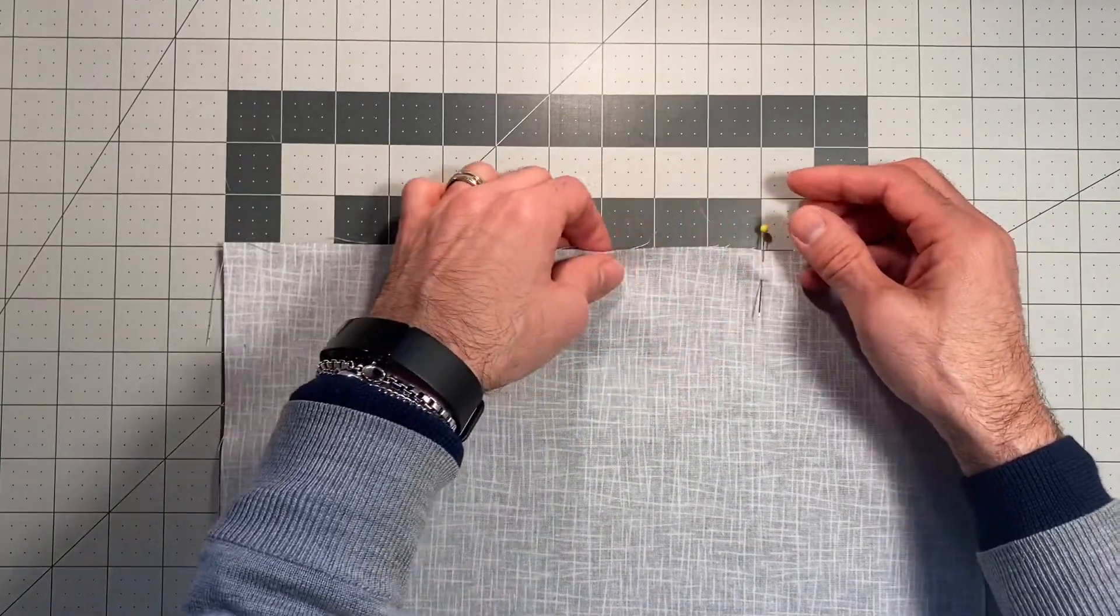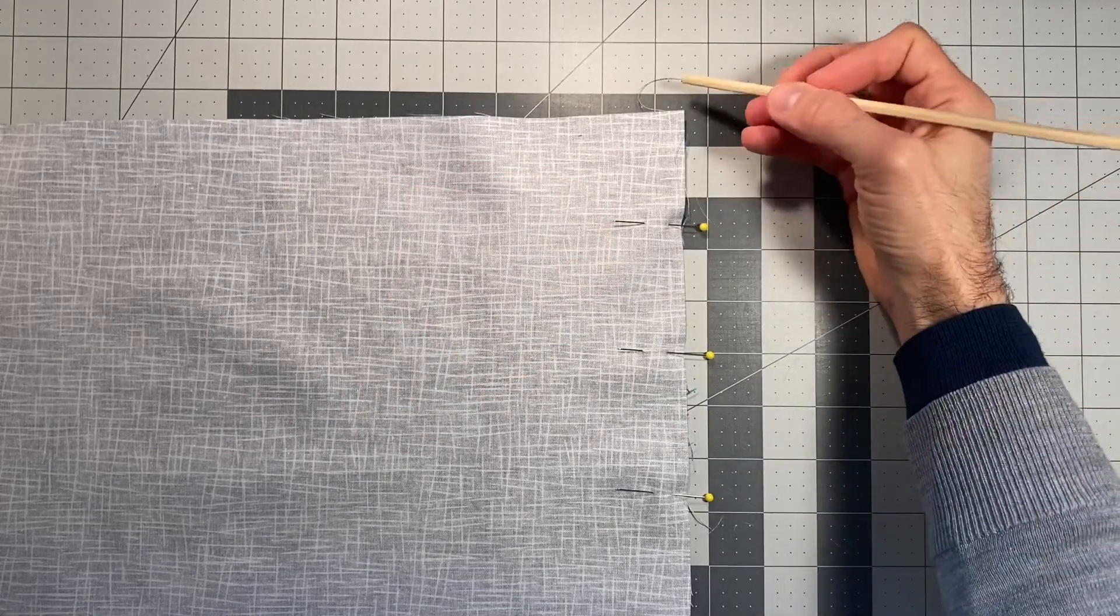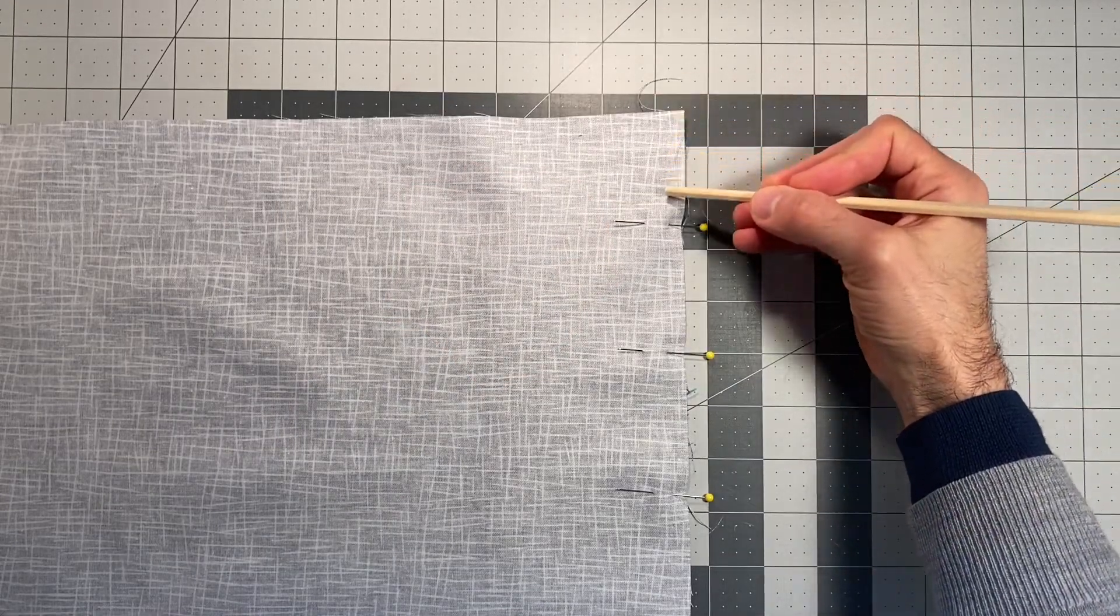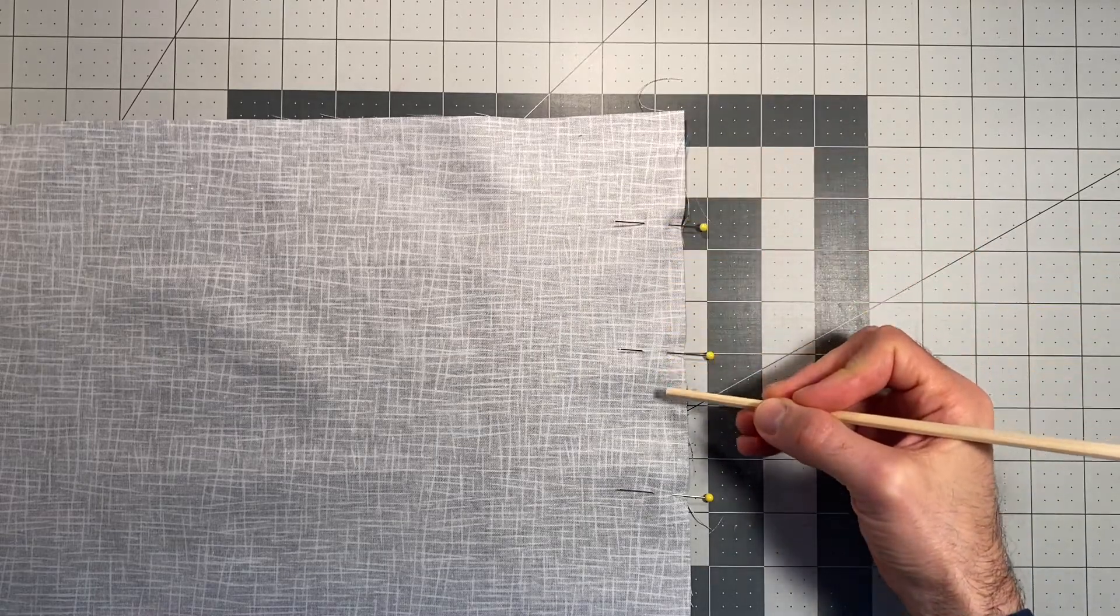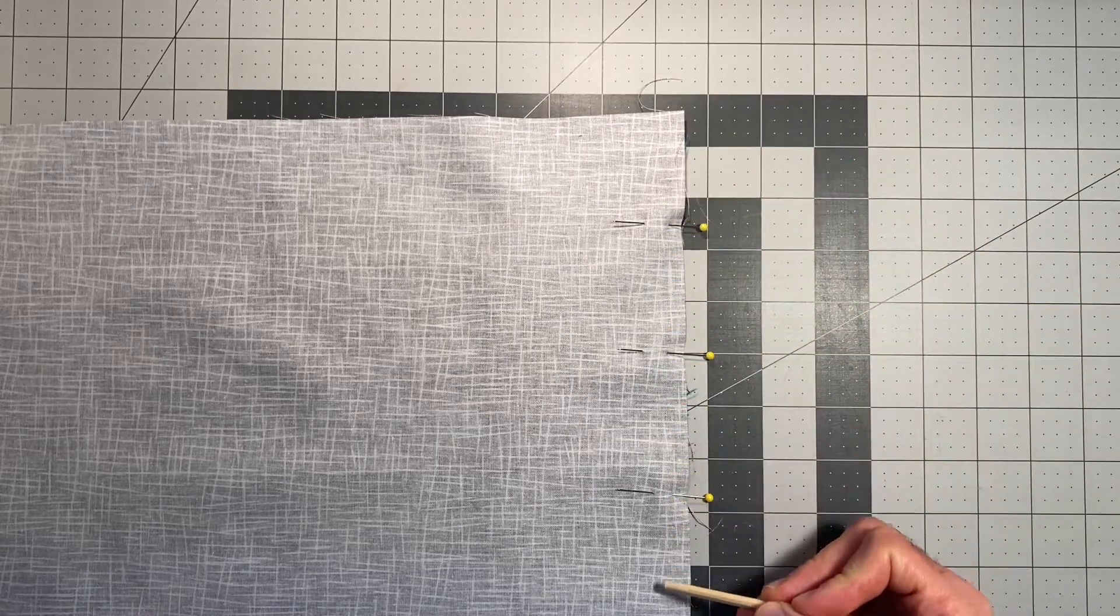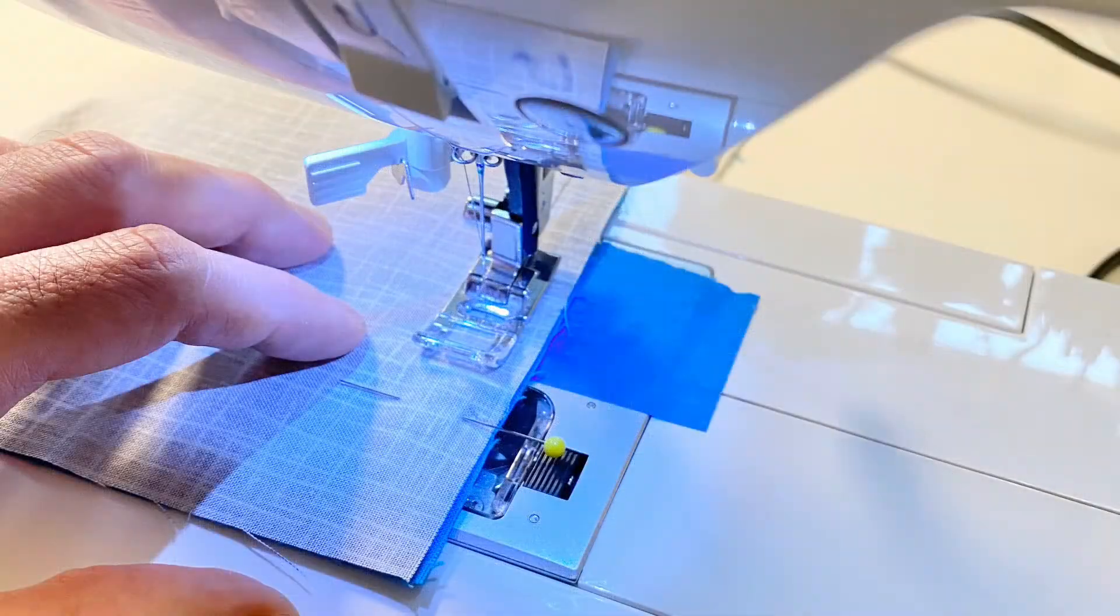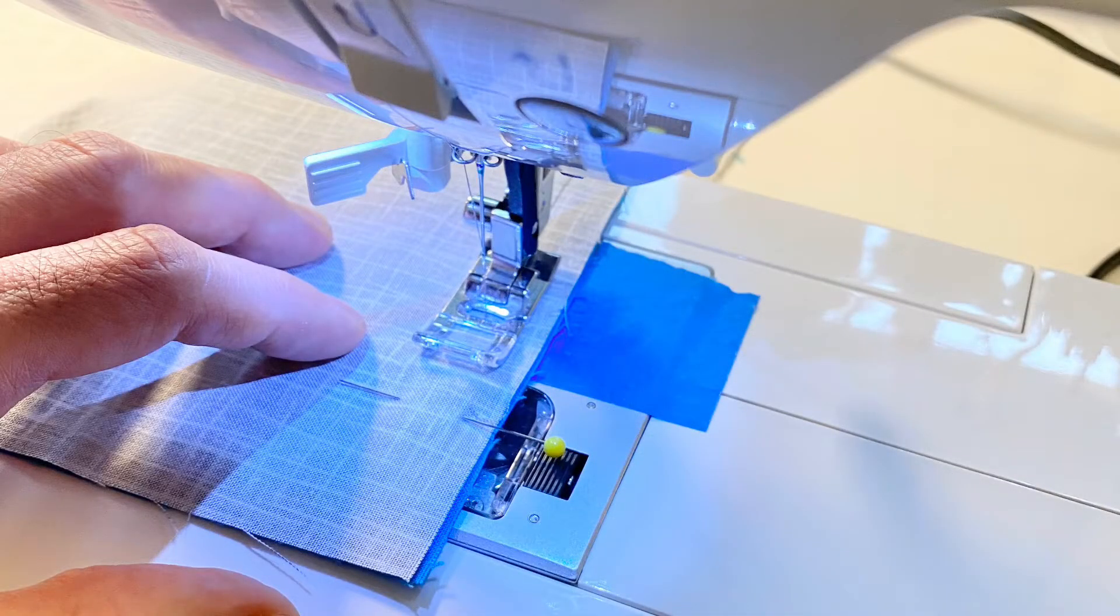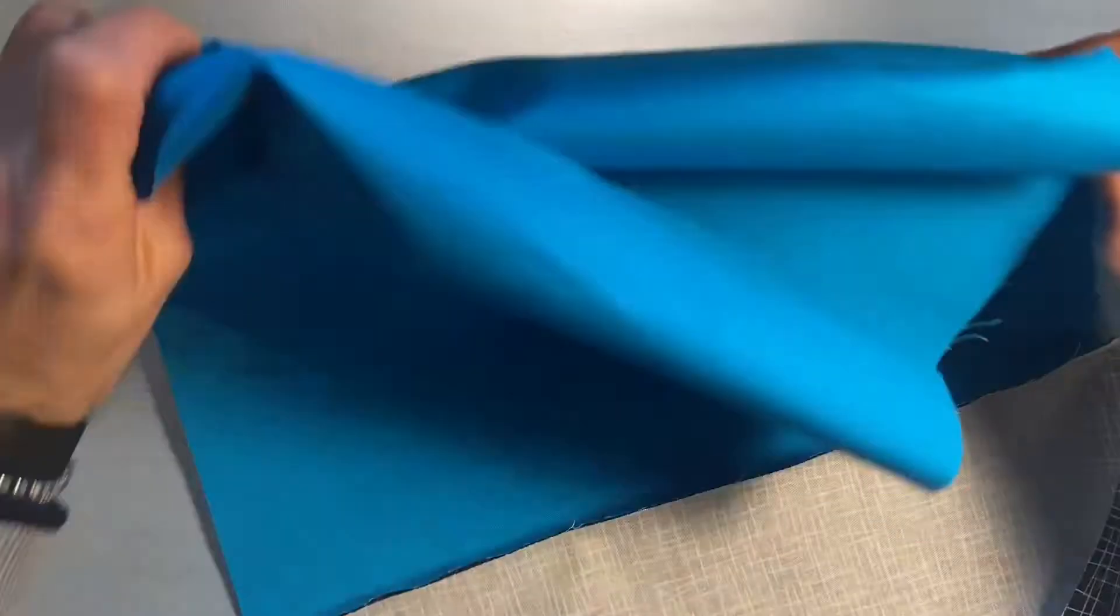Now I'm going to sew with a half inch seam allowance along this 14 inch edge. A half inch seam allowance means the sewing machine's needle is a half inch away from the edge of the fabric. I'll be using a half inch seam allowance a lot on this project, so I've put a piece of blue painter's tape on the half inch mark so I can find it easily. I butt the raw edge of the fabric up to the edge of the painter's tape and I'm ready to sew. Be sure to remove the pins before you get to the machine's presser foot and needle.